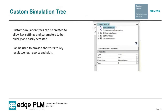Lastly in terms of automation, the Star CCM simulation tree can look daunting to a first-time user, so we have the capability to quickly create a custom simulation tree. This allows dragging particular parameters of interest, results scenes, or result reports into a focused view. A senior engineer can set this up so that a junior engineer works in this focused space while still being able to access the full physics of the original model. These custom trees are very easy to create and help focus other users on the simulation at hand.